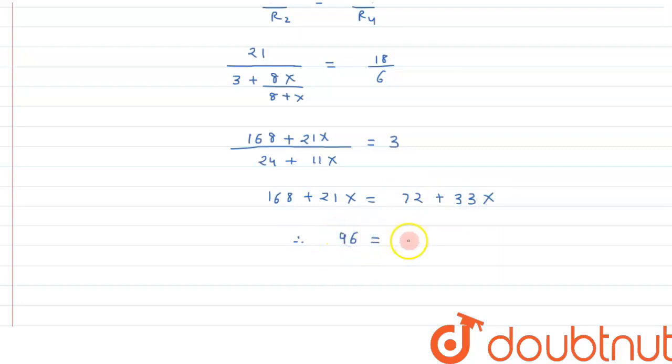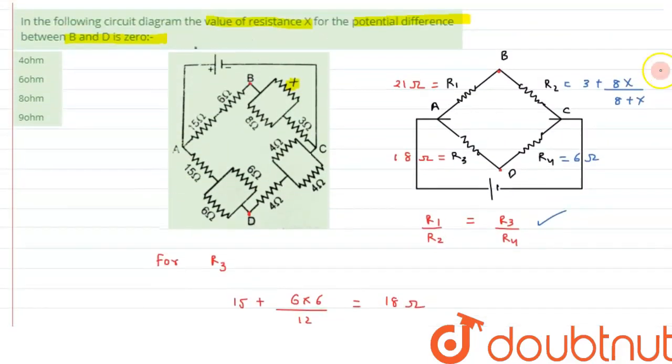Therefore, if you subtract this value, we can write it as 96, and that is equals to 12X. Therefore the value of X comes out to be 8 ohms. So this is the value of resistance X we are getting, and this matches with option C.